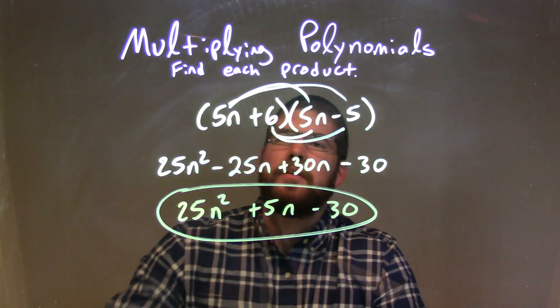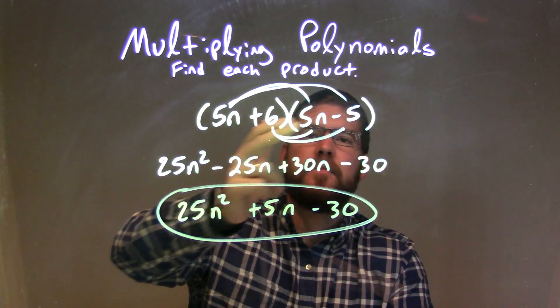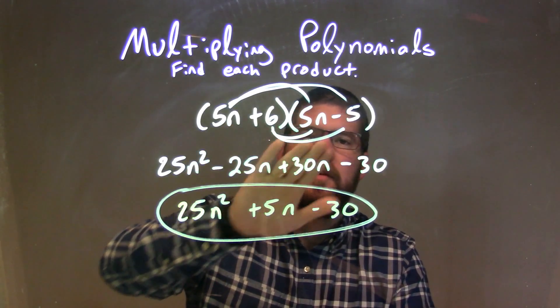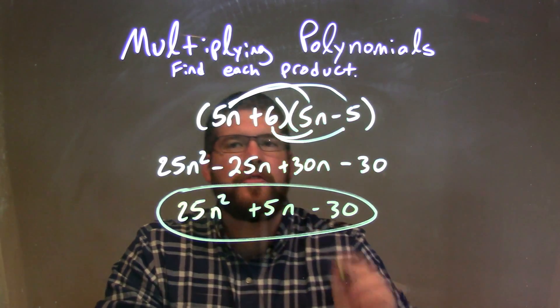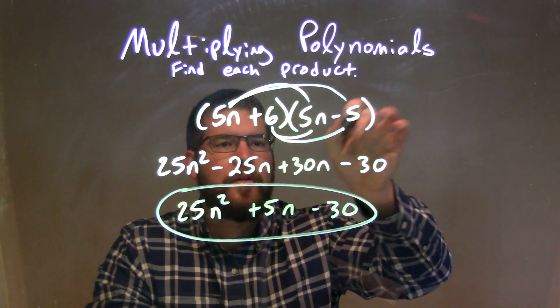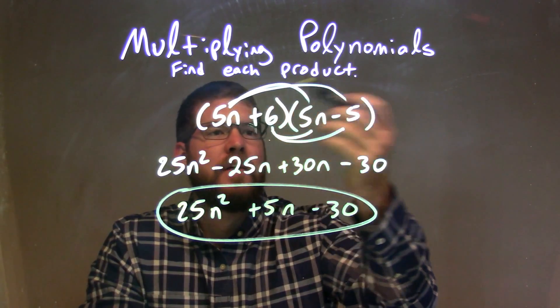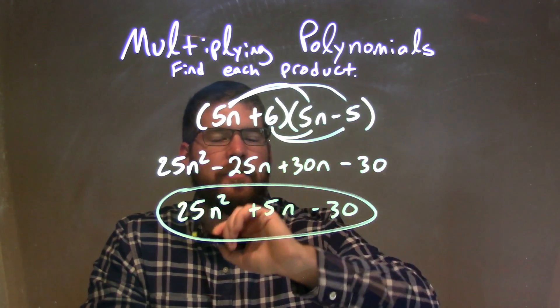So let's recap. We're given 5n plus 6 times 5n minus 5. We multiply all parts of the first parenthesis by all parts of the second parenthesis, and show our arcs when we multiply each one. 5n times 5n is 25n squared, and 5n times minus 5 is minus 25n.